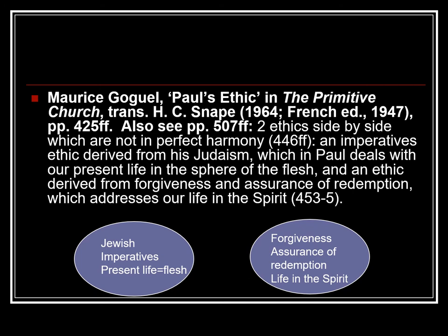Maurice Goguel, in his Paul's Ethics in the Primitive Church, says that Paul placed two ethics side by side which are not in perfect harmony: an imperatives ethic derived from his Judaism, which deals with our present life in the sphere of the flesh, and an ethic derived from forgiveness and assurance of redemption, which addresses our life in the spirit. The indicative is the second, the imperative is the first — they stand side by side, they're not related.